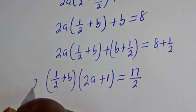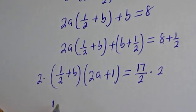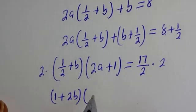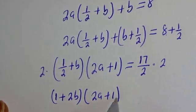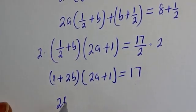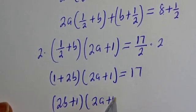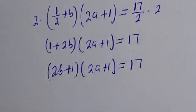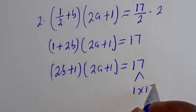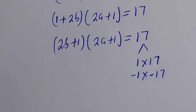So we want to remove the 2s. Let's multiply both sides by 2. Then this is (1 plus B)(2A)(2A plus 1) is equal to 17. And this can be written as (2B plus 1)(2A plus 1) is equal to 17. But 17 can be written as 1 multiplied by 17, or minus 1 multiplied by minus 17. There are two cases.